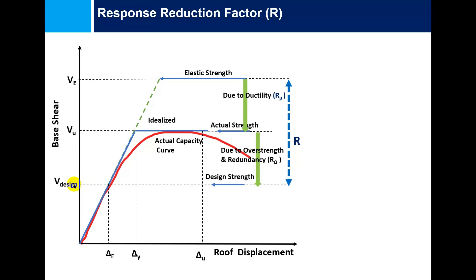V-design is generally used in the design of the structure. The red curve here is the actual capacity curve of the structure, which can be obtained by pushover analysis, and the blue one is the idealized bilinear curve for the actual strength of the structure. This actual capacity curve can be obtained from the over-strength of the material.